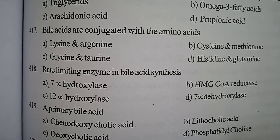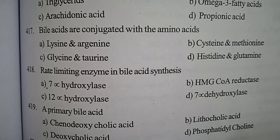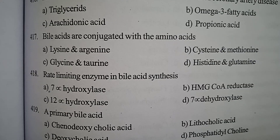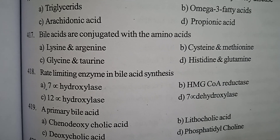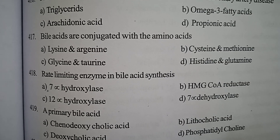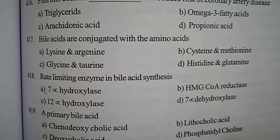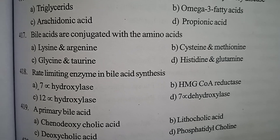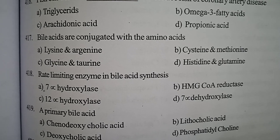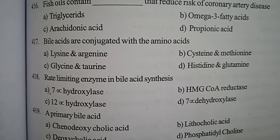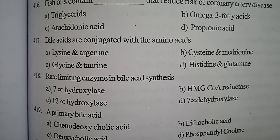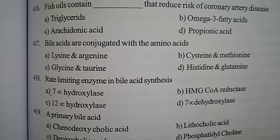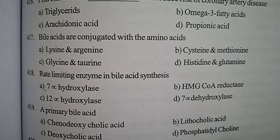Next one: bile acids are conjugated with the amino acids — option A lysine and arginine, option B cysteine and methionine, option C glycine and taurine, option D histidine and glutamine. Correct answer: option C, glycine and taurine.